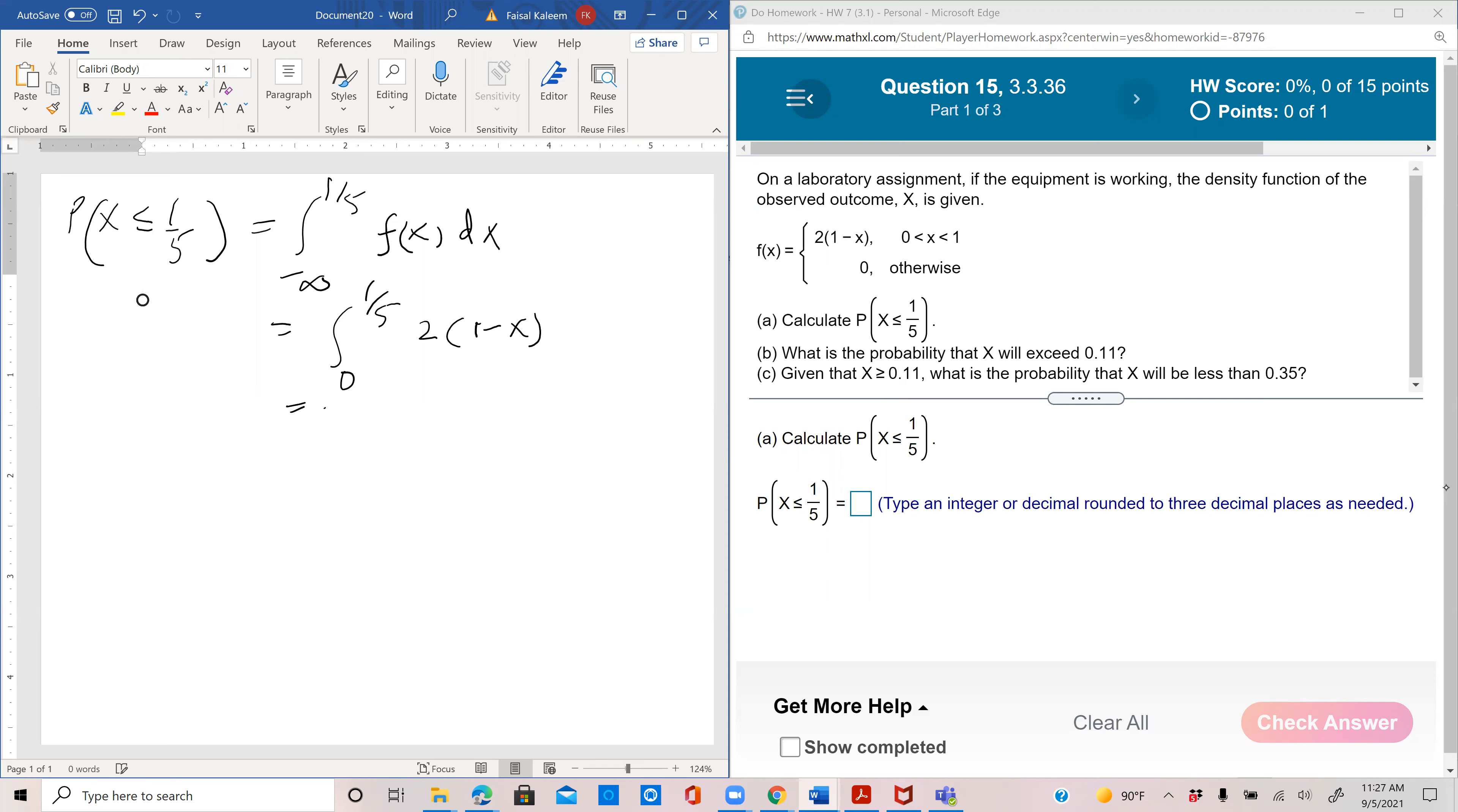So you can pull the two out and it's x minus x squared by two. Zero to one-fifth equals... So we can multiply the two inside now, so it'd be 2x minus x squared.